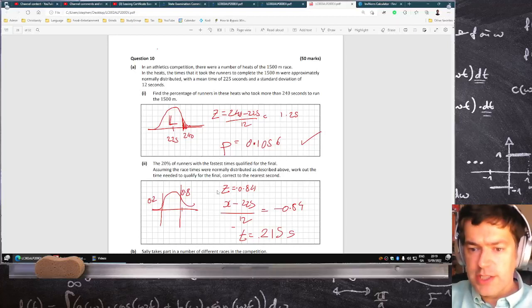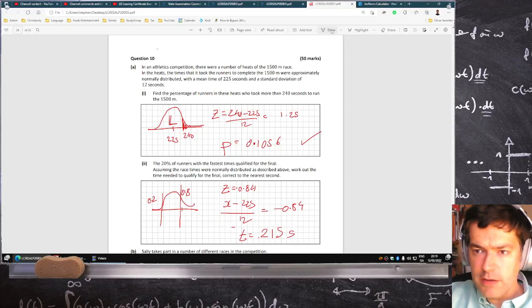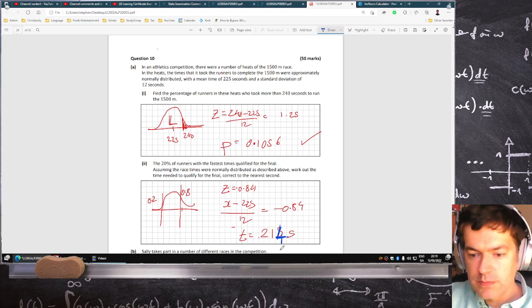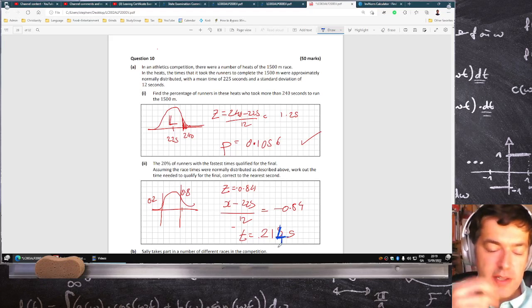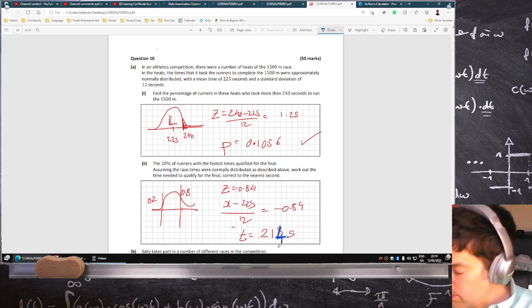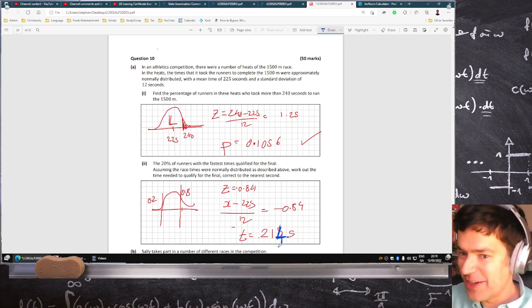Okay, just the answer for question 10. It was pointed out quite correctly that I should have rounded down in part two, because you want the top 20% of runners. So yeah, it was 214.9, I should have rounded down. I got caught out there.